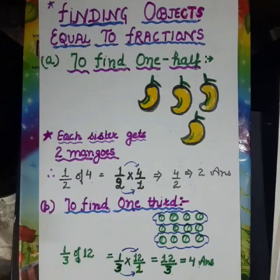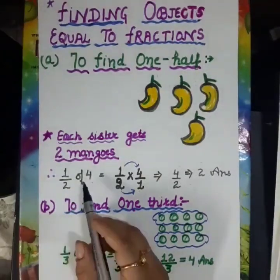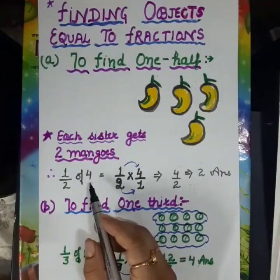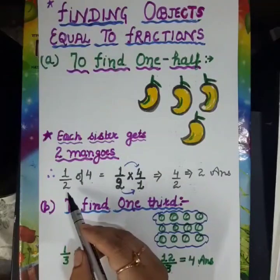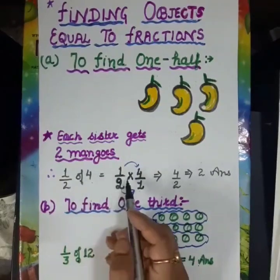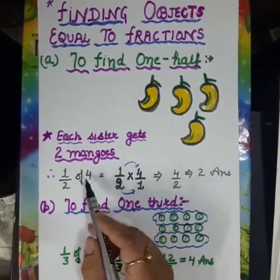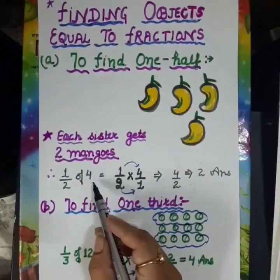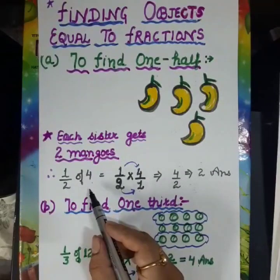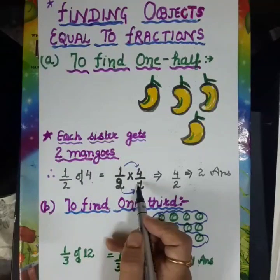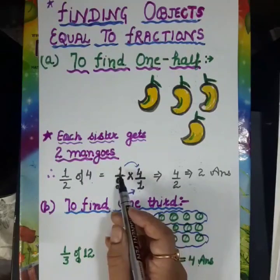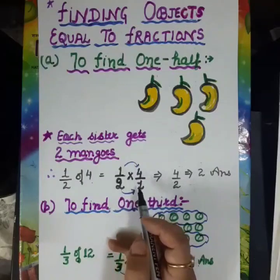As we know from the concept of fractions, half means 1 by 2. So we can write it as 1 by 2 of 4. Here, 1 is the numerator and 2 is the denominator. 'Of' means multiply, and 4 is a whole number. There is no denominator, so we will write 1 as the denominator. We can write it as 1 by 2 multiplied by 4 by 1.